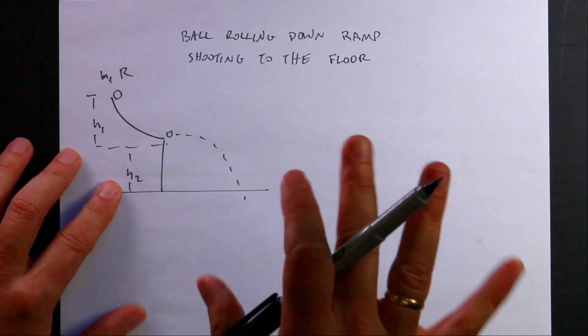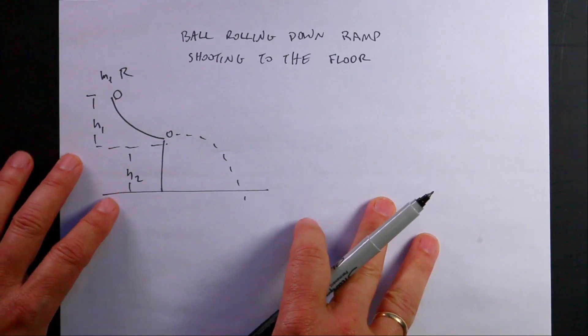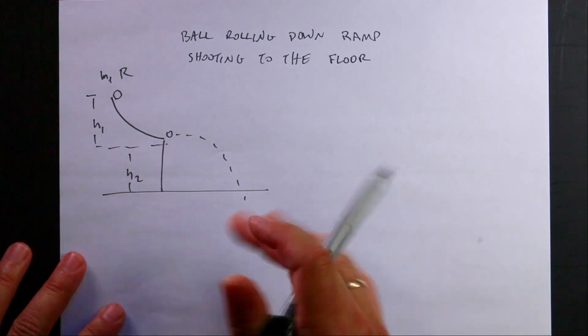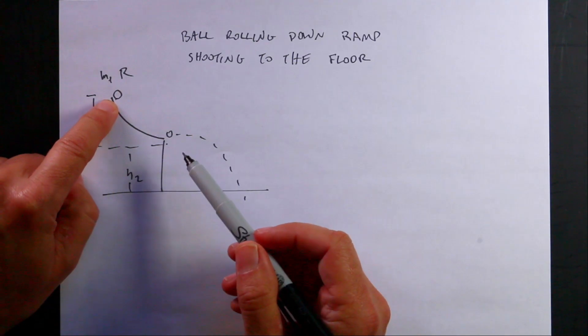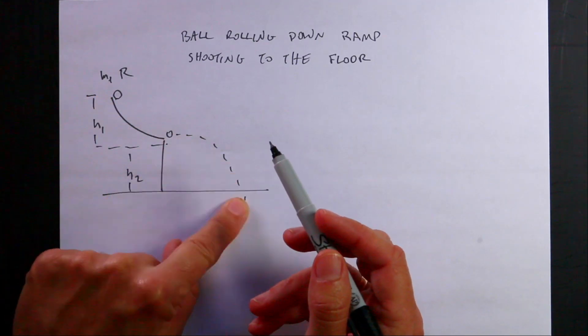Okay, so I just did this problem and I'm going to start off the beginning fairly fast. If you want to see my previous solution, that's fine, but here's the situation. There's a ball on a curved ramp and it rolls down the ramp and then shoots off the ramp and onto the floor.